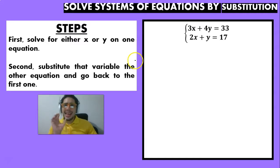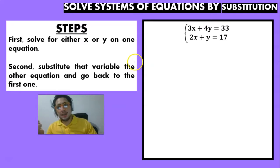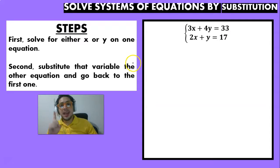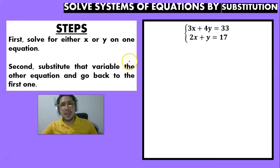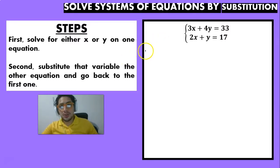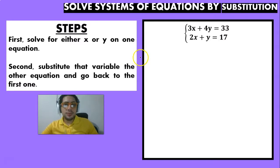After you do that, you're going to substitute that value you found into the other equation, and then you're going to get your first value. After you get your first value, you're going to substitute once again back into the first equation that you found, and you're going to get your second value. So again, the first thing is that we're going to choose one of the two equations and choose if we want to solve for x or for y.